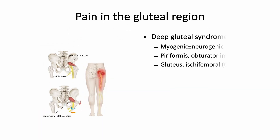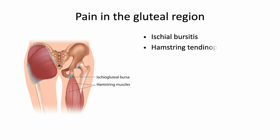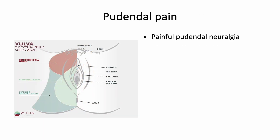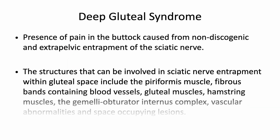Deep gluteal pain syndrome contributes to gluteal pain and has become more recognized. By location, I can identify coccydynia, ischial bursitis, hamstring tendinopathy, and pudendal neuralgia, but I'll review those later. Let me talk about deep gluteal pain syndrome.